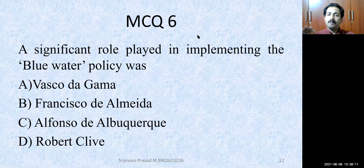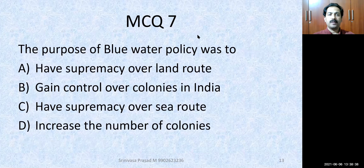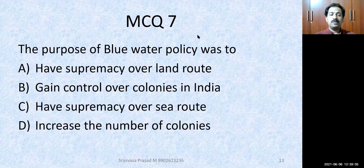MCQ number 6: A significant role played in implementing the blue water policy was none other than Francisco D. Almeida. MCQ number 7: The purpose of the blue water policy was — to have supremacy over land route; gain control over colonies in India; have supremacy over sea route; or increase the number of colonies. The correct answer is: have supremacy over sea route.